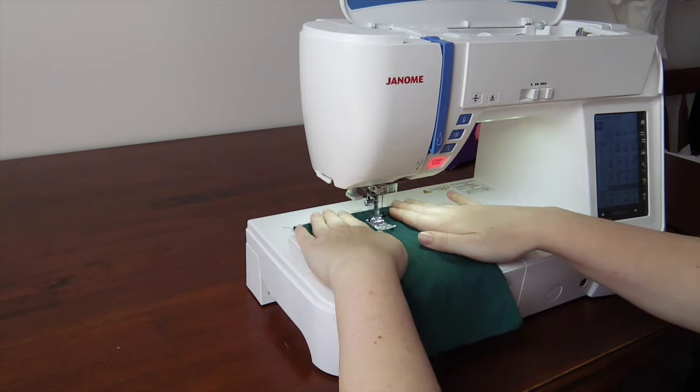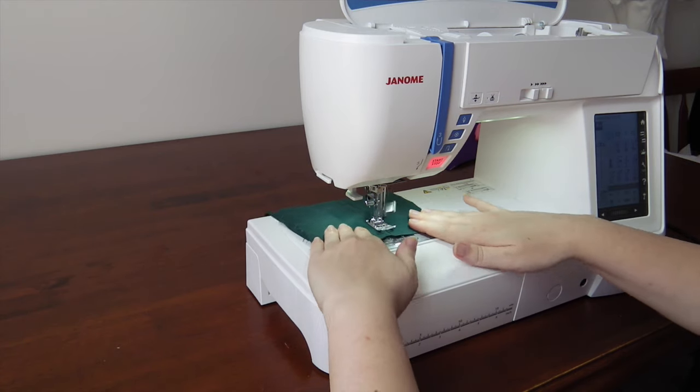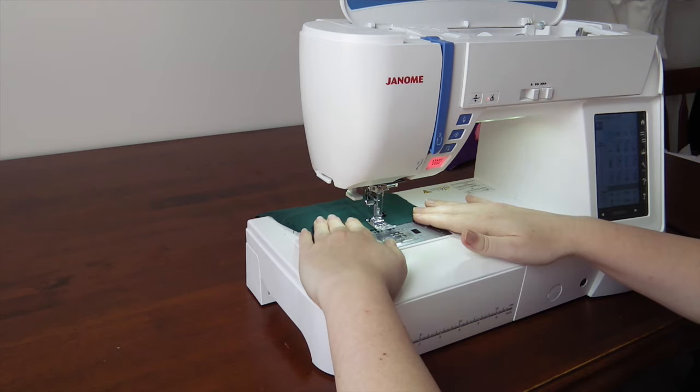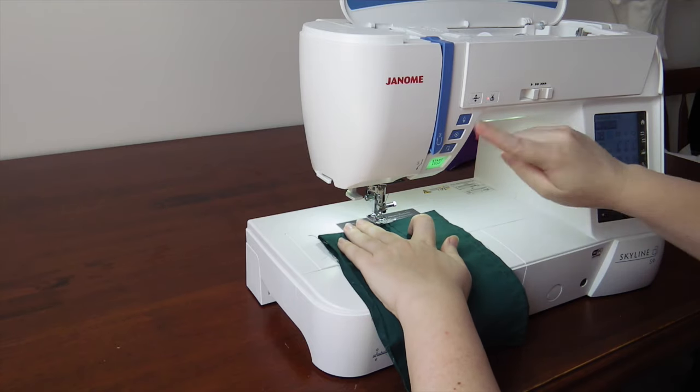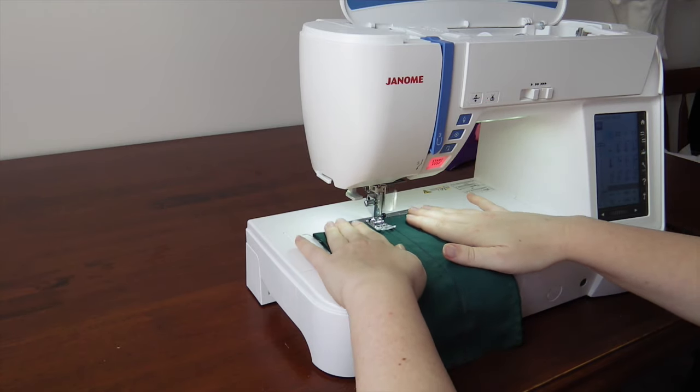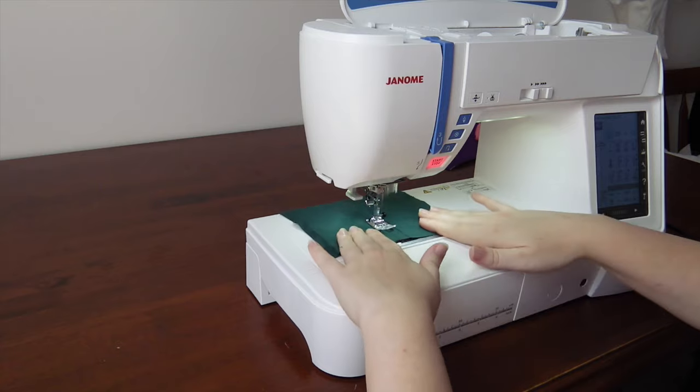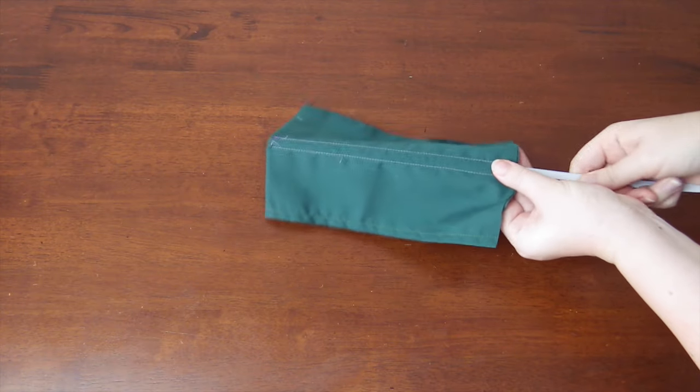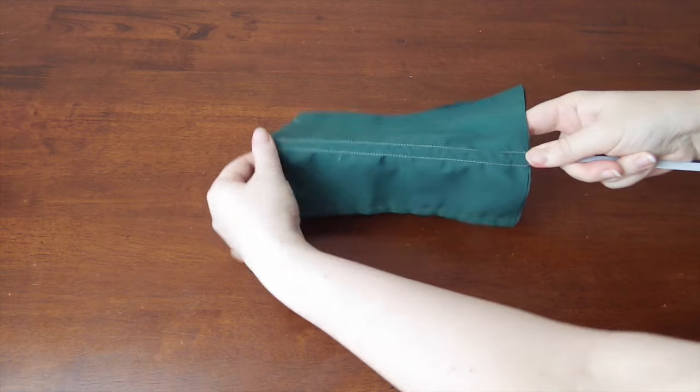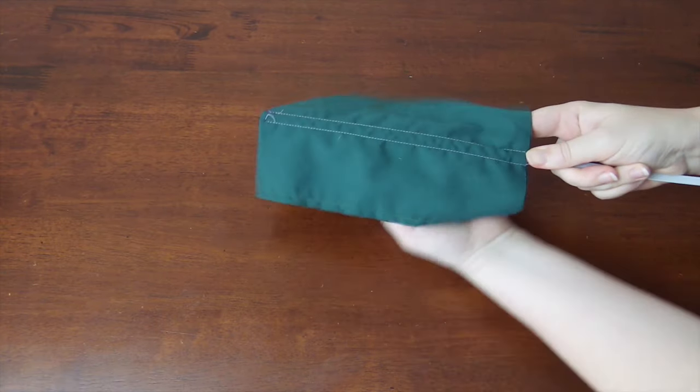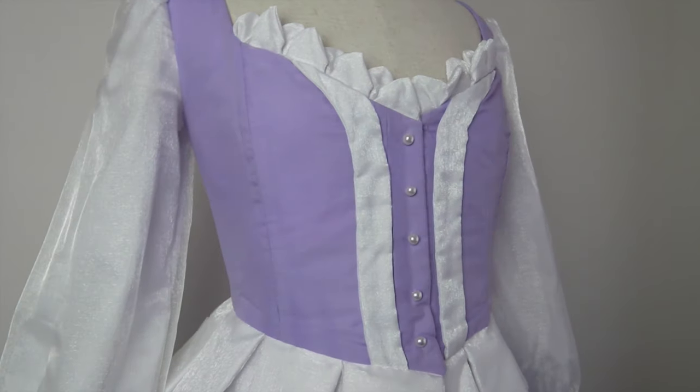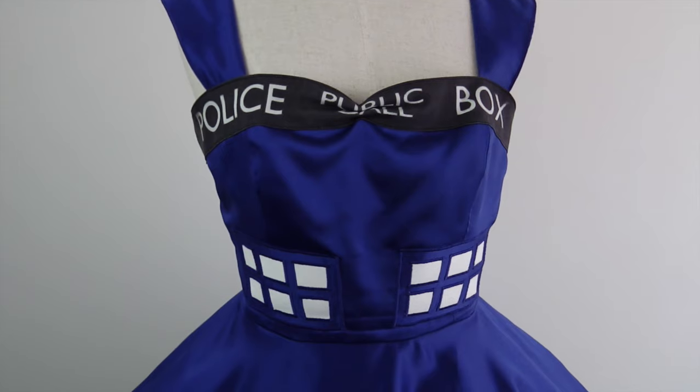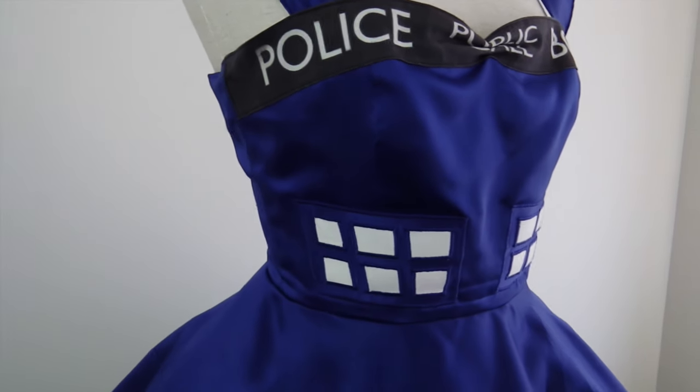To add boning into a cosplay, you create channels into the garment, usually into the lining. I found it to be a good idea to sew the channels to be a couple of millimeters wider than your boning width. And when cutting the boning, to cut it about two centimeters shorter than the finished garment length, so that the edges are not hard pressed up against the seams. As you've probably guessed, boning is used a lot in giving structural support in bodices and corsets.